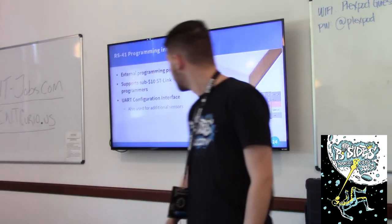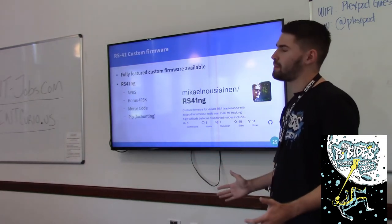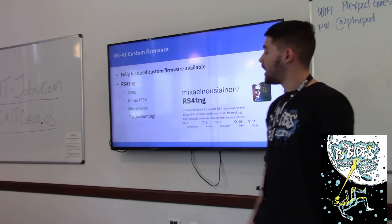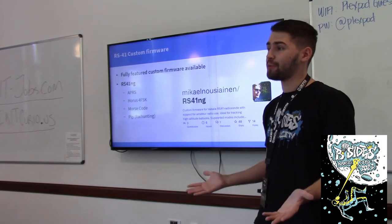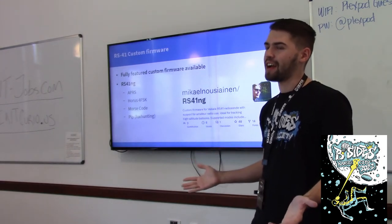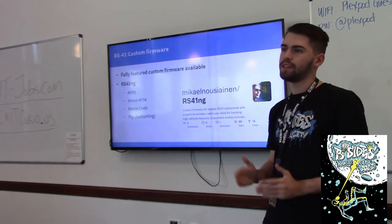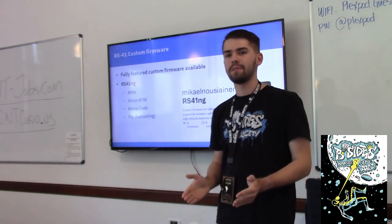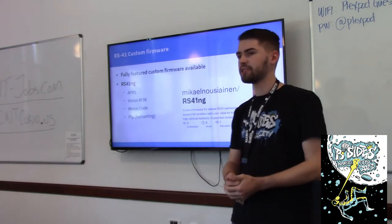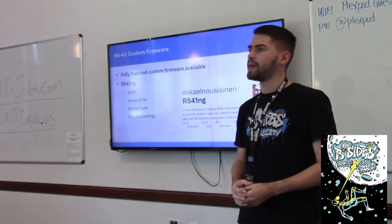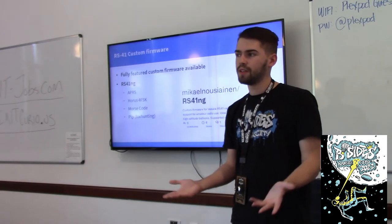This is the only one to feature a fully featured custom firmware at the moment — it's called RS41NG, not related to the model number but that was coincidence. It supports APRS, which is very common with amateur radio position reporting. One thing you can do is flash the firmware, put it in your car, and track your car — a lot of radio amateurs like to do that. It's a very cheap entry point. Another mode is 4FSK, a kind of transmission that amateur balloonists like to use to track their weather balloons — it allows transmitting certain kinds of data, and I think you can even transmit pictures with it.